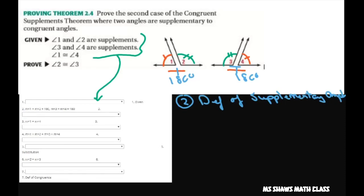And then number three, they also give you the statement that the measure of angle 1 equals the measure of angle 4. Well, that's basically from your given. So that's just the definition of congruence.